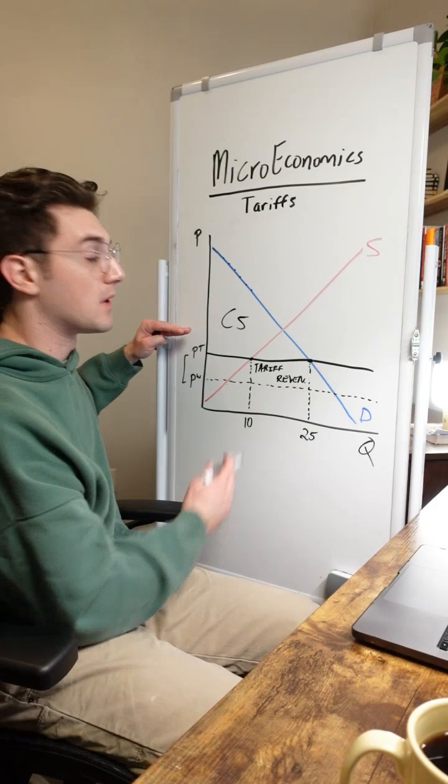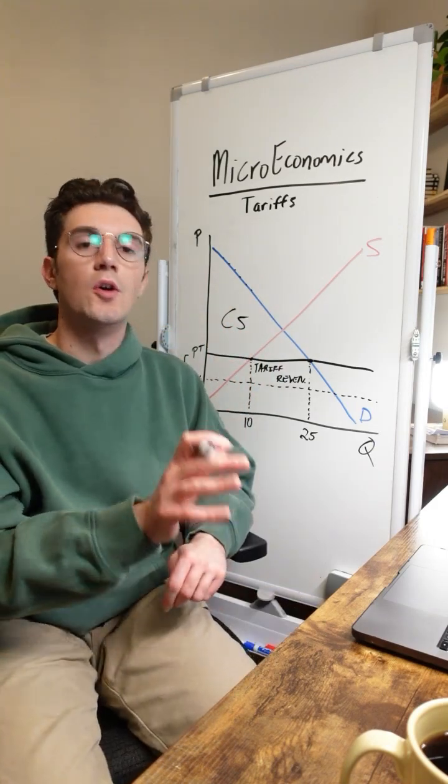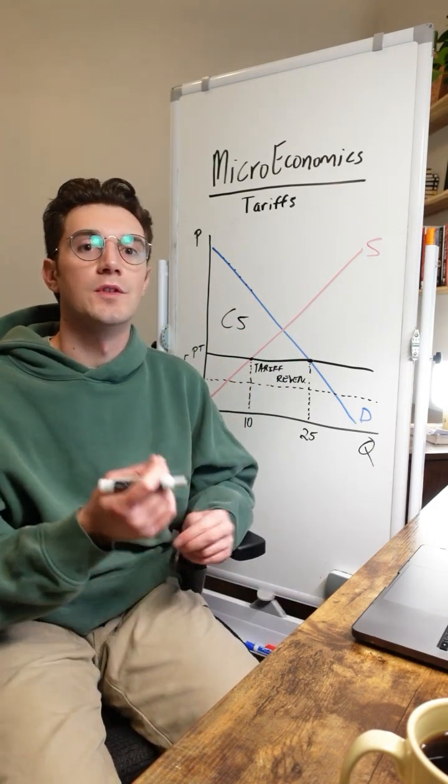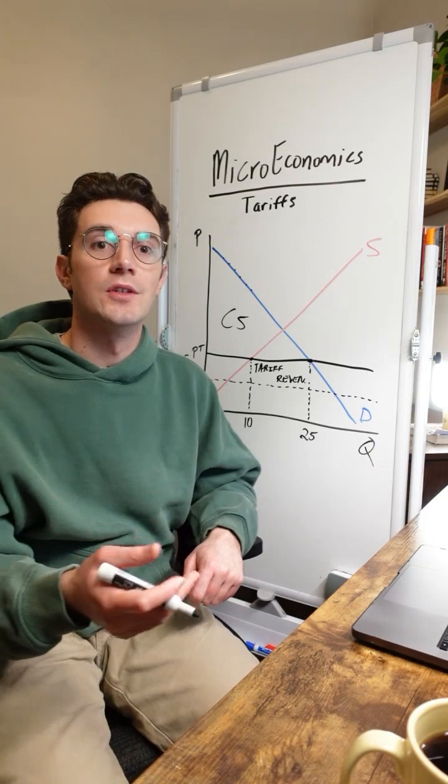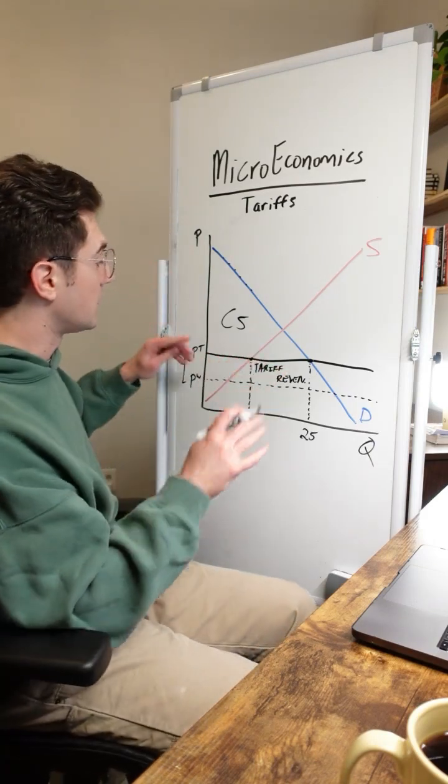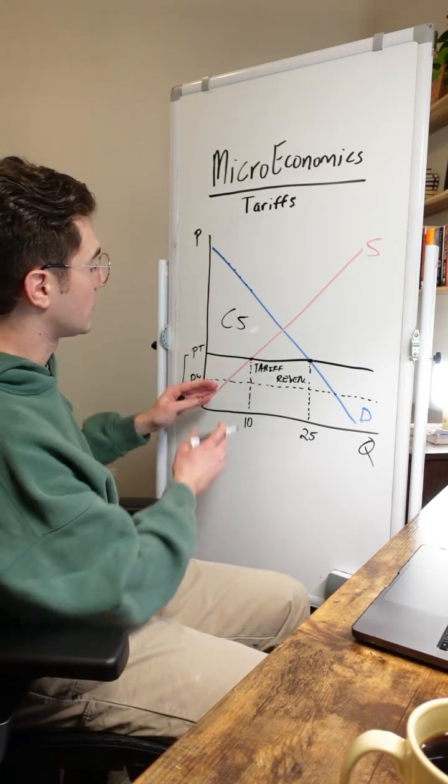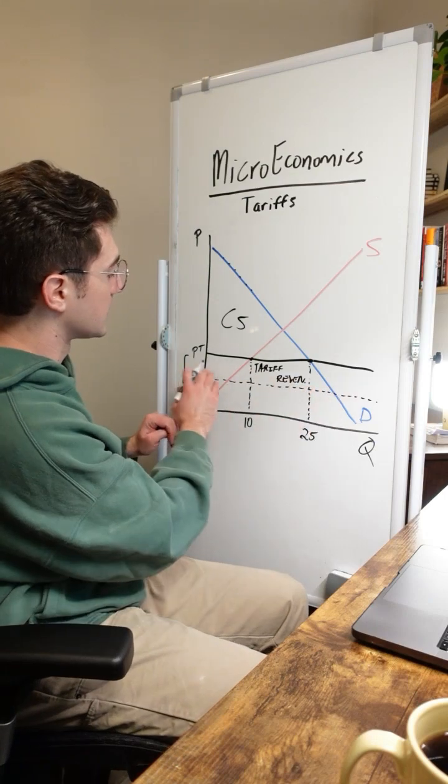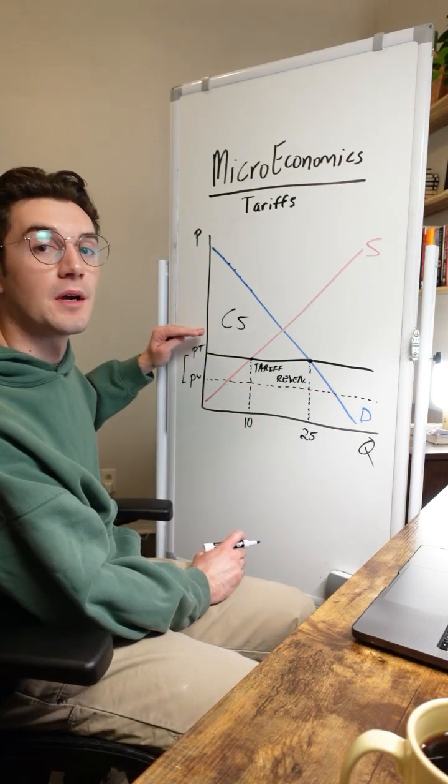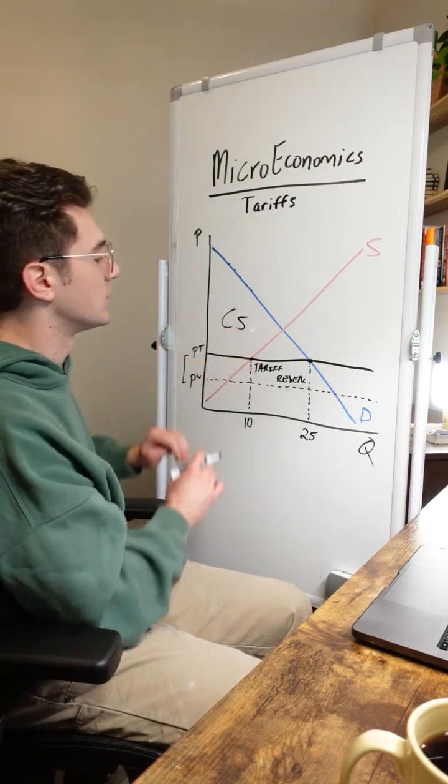Basically everything above the tariff price and below the demand curve. It's the total additional benefit that consumers are achieving by buying this good at the tariff price. And to be clear, it used to be more. It used to actually expand down to the world price. But now that the government's bumped up the price with the tariff, it's cut into consumer surplus.